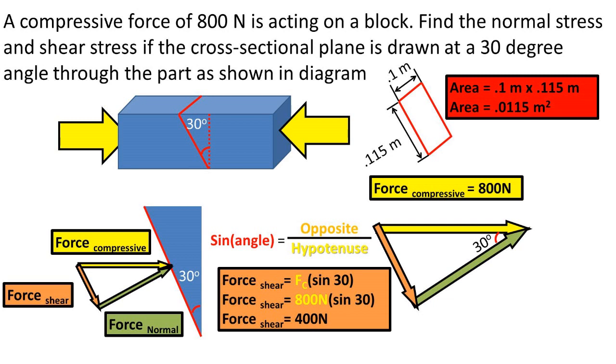So we can use the sine of 30 degrees times the hypotenuse of the triangle to solve for the shear force of the opposite side of the triangle. After plugging in our numbers, we get a shear force of 400 newtons.